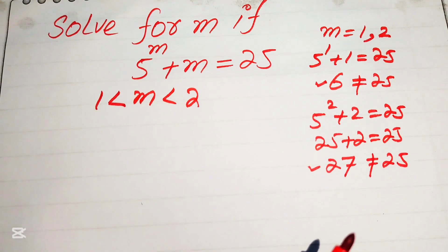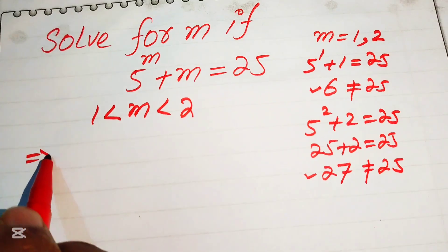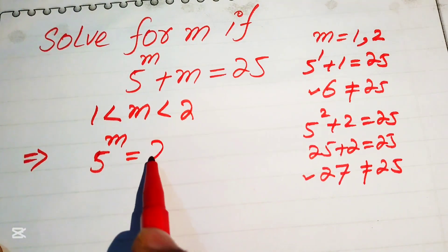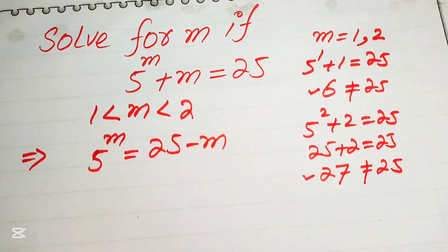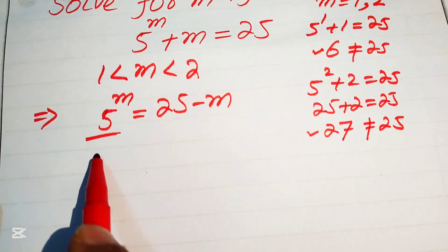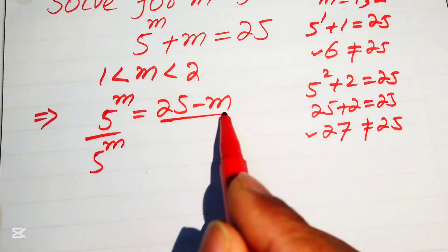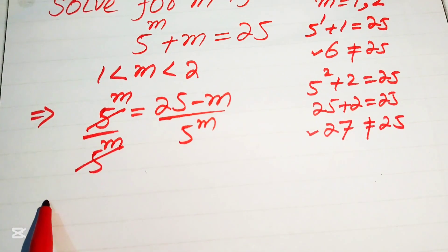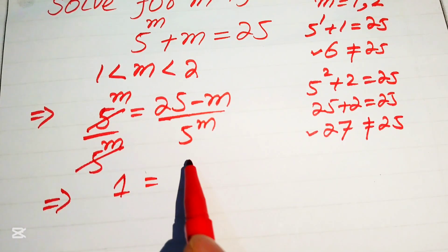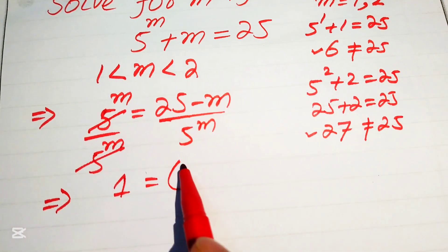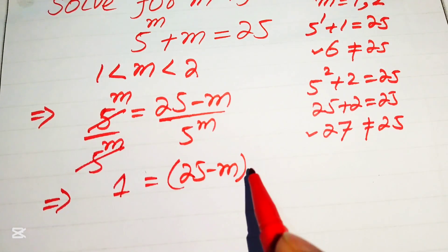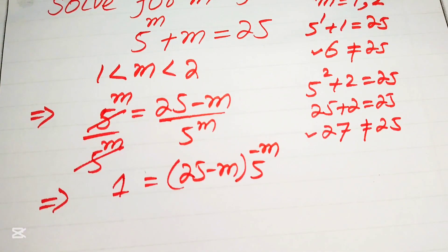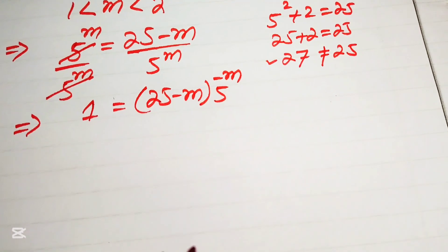Now we need to find the exact value of m. First, we move m to the right-hand side, giving 5 to the power of m equals 25 minus m. Then we divide both sides by 5 to the power of m. These cancel, and we get 1 equals (25 minus m) times 5 to the power of minus m.